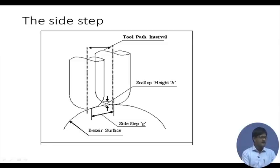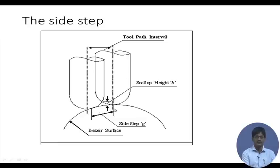The height of the roughness created is called scallop height. The distance between the center lines of the tool is called the tool path interval, and the distance between the cutter contact points is called the sidestep.